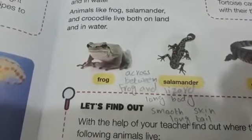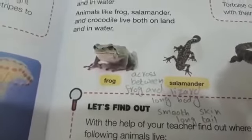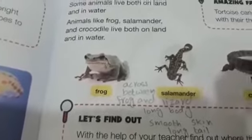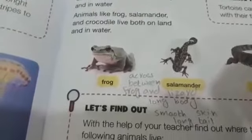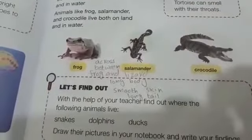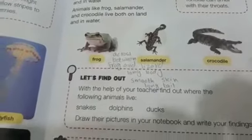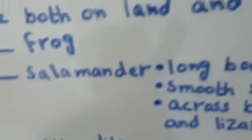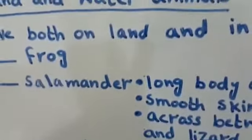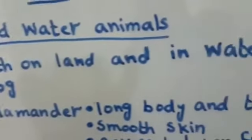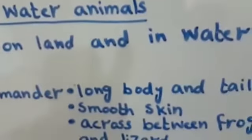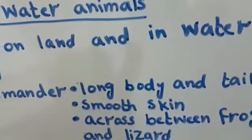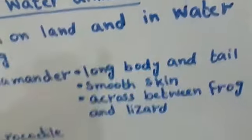It is neither frog nor lizard, but a cross between frog and lizard. The third one is crocodile — they live both on land and in water.